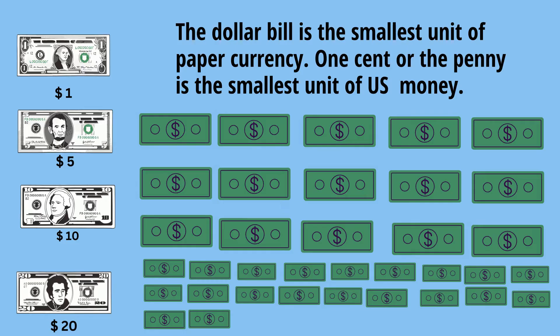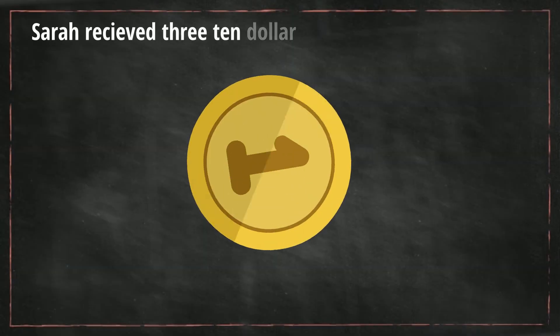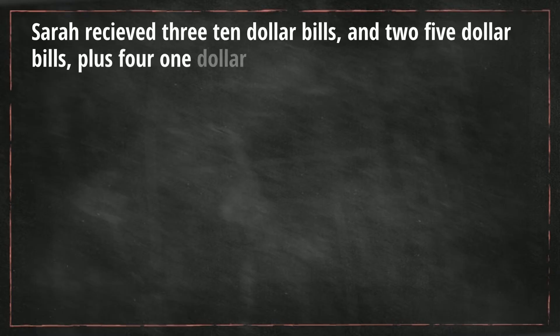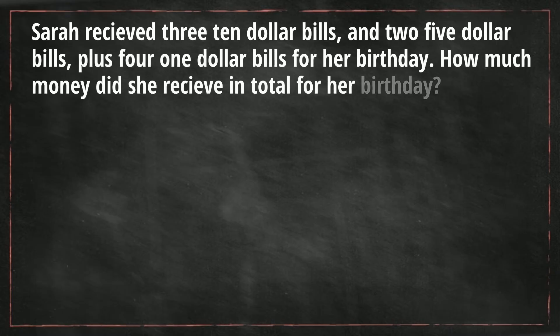Let's get started and see if we can figure out how to solve some word problems. Number one: Sarah received three ten dollar bills and two five dollar bills, plus four one dollar bills for her birthday. How much money did Sarah receive in total?